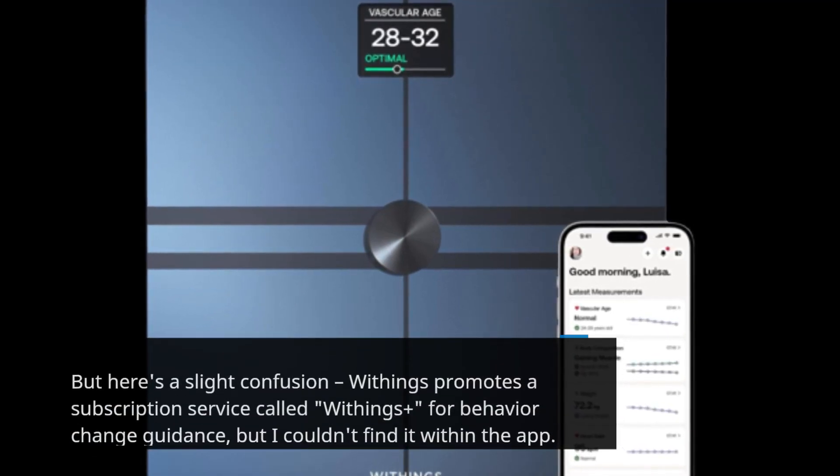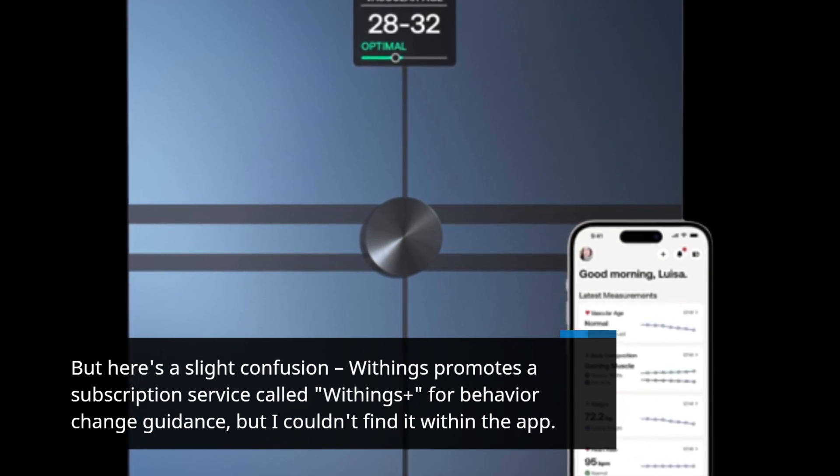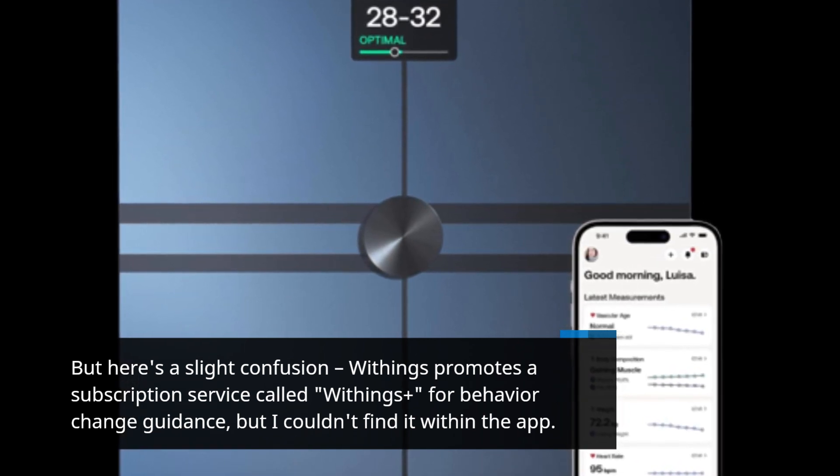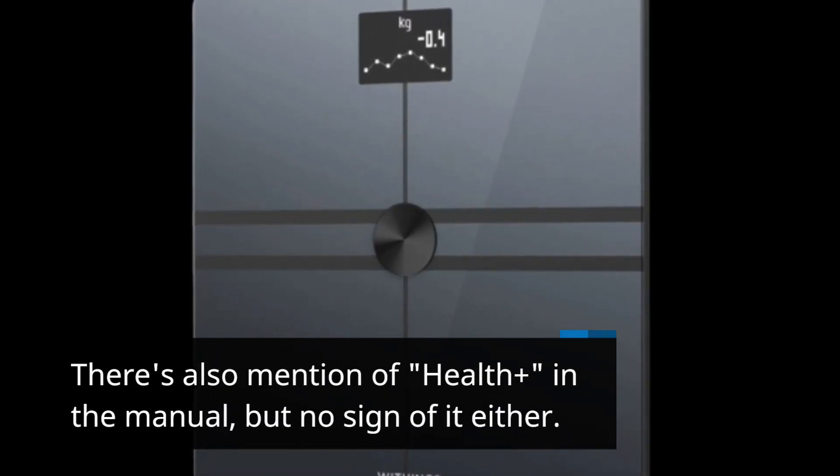But here's a slight confusion - Withings promotes a subscription service called Withings Plus for behavior change guidance, but I couldn't find it within the app. There's also mention of Health Plus in the manual, but no sign of it either.